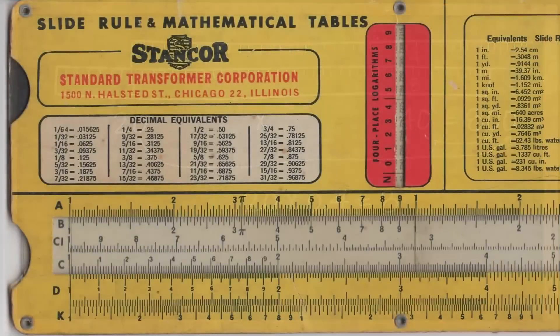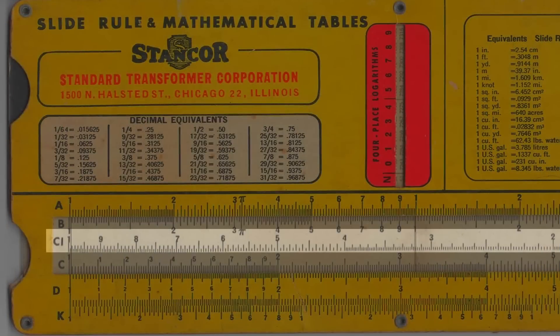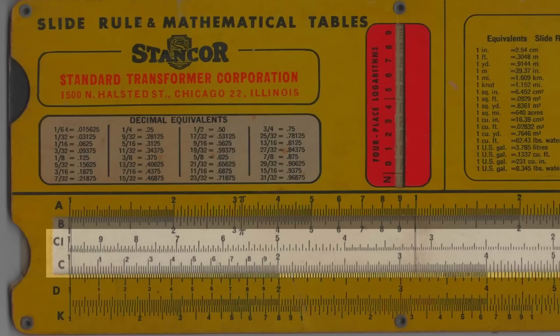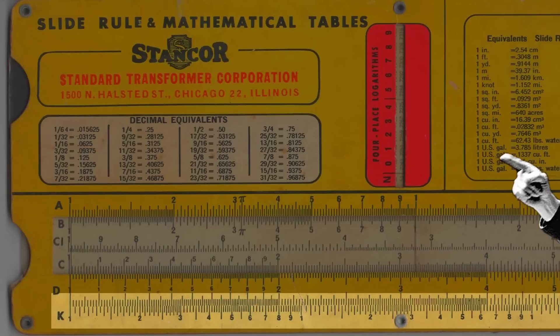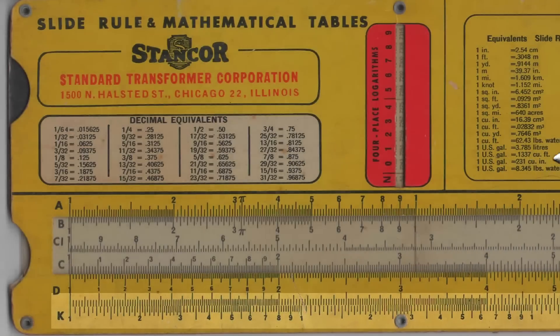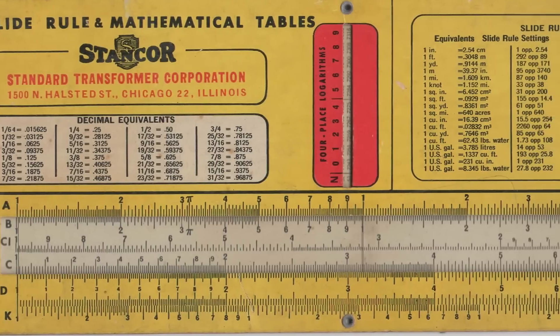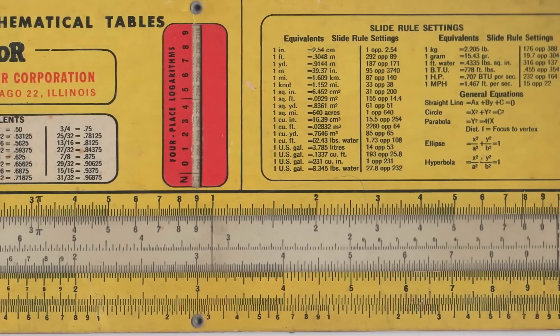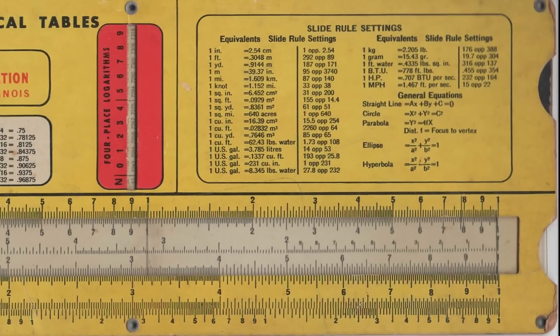This one has a CI scale in the middle. That scale is the opposite, or inverse, of the C scale. That one's for calculating reciprocals. The K scale is for cubing—not Cuban, cubing—multiplying by the power of 3. There's also some cool charts on here for doing unit conversions.